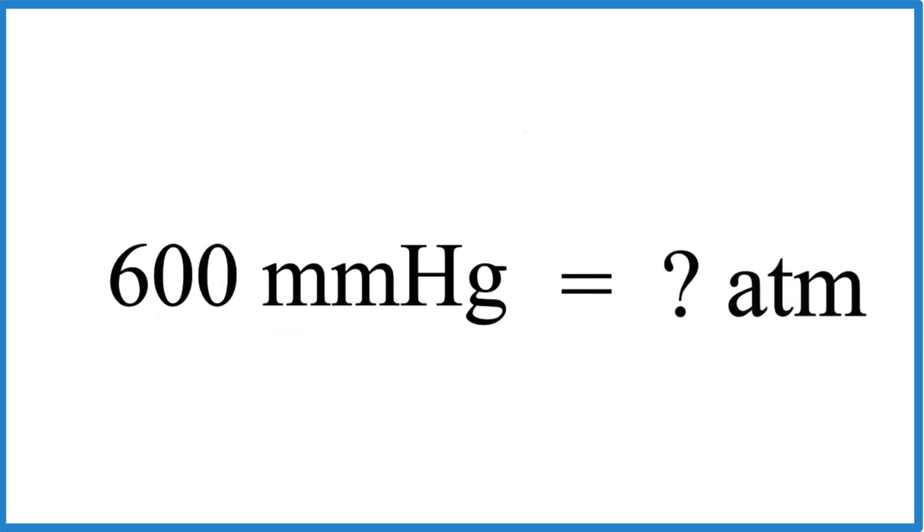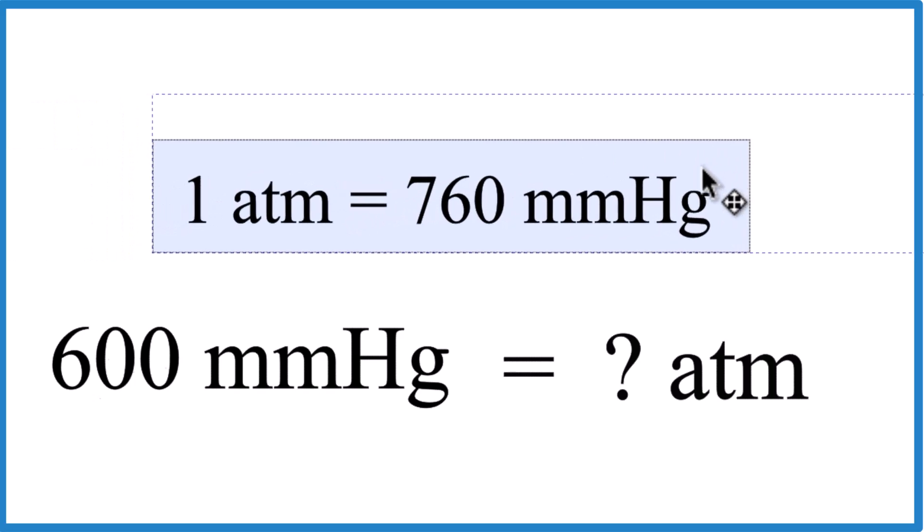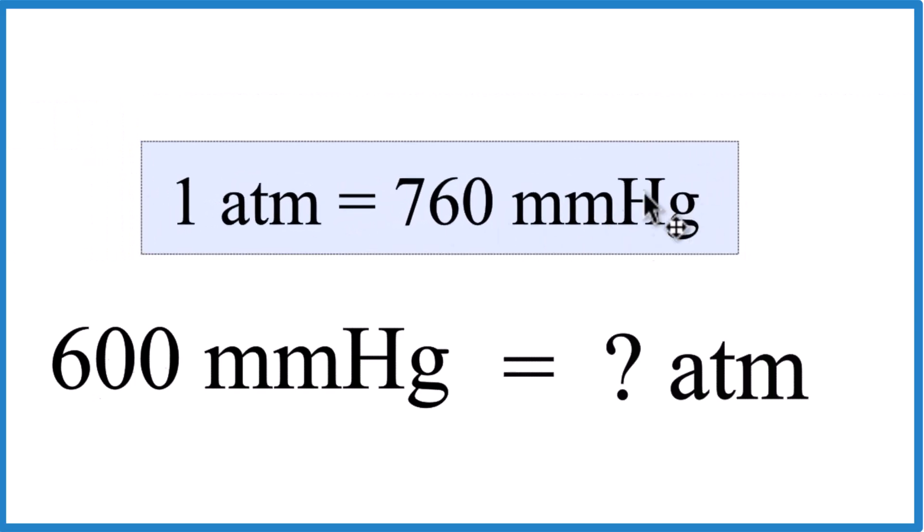You need to recognize that one atmosphere is equal to 760 millimeters of mercury. So you memorize this or look it up. This is our conversion factor. So we're going to multiply our 600 millimeters of mercury times a conversion factor.